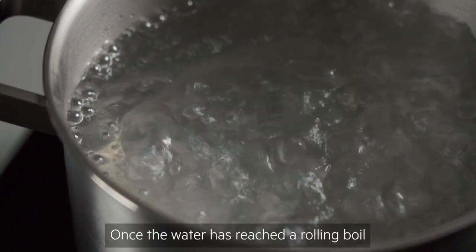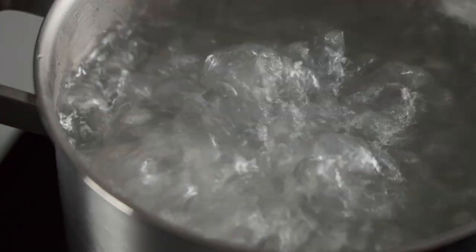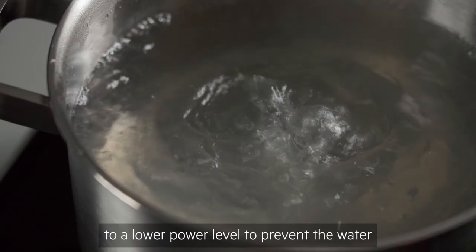Once the water has reached a rolling boil, the hob will sense the rising bubbles and an audible alert will sound. The power will then automatically reduce down to a lower power level to prevent the water from boiling over.